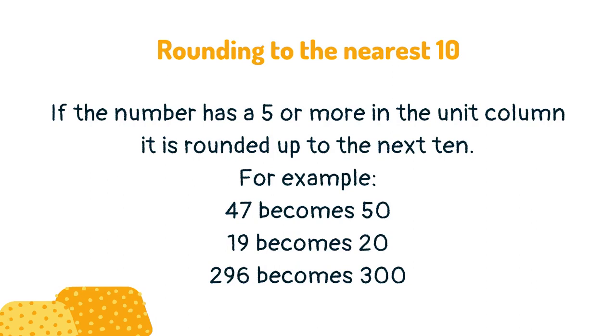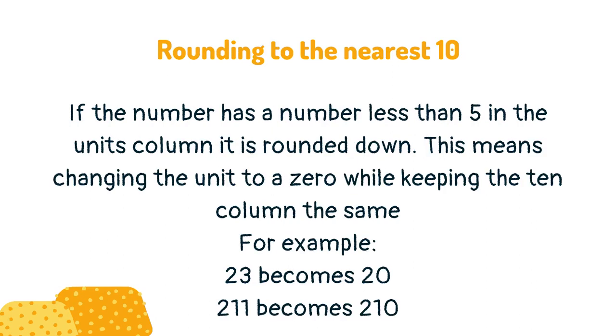If the number has a 5 or more in the unit column, it is rounded up to the next 10. If the number has a number less than 5 in the units column, it is rounded down. This means changing the unit to a 0 while keeping the 10 column the same.